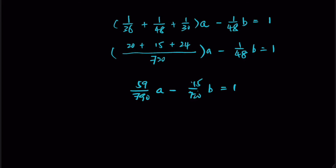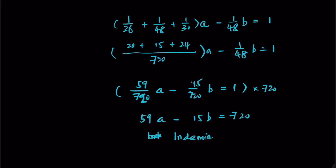We want to get rid of the denominator by multiplying through by 720. The whole equation multiplied by 720 gives us minus 15B = 720. We end up with an indeterminate equation, which means there are two unknowns in one equation.